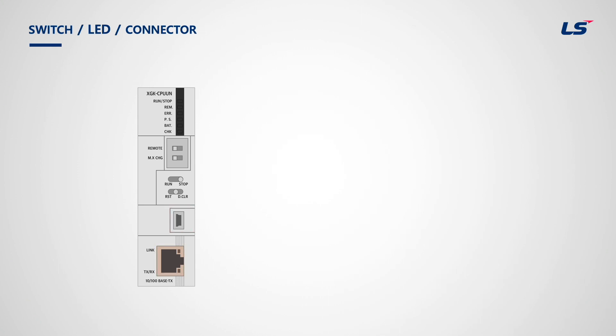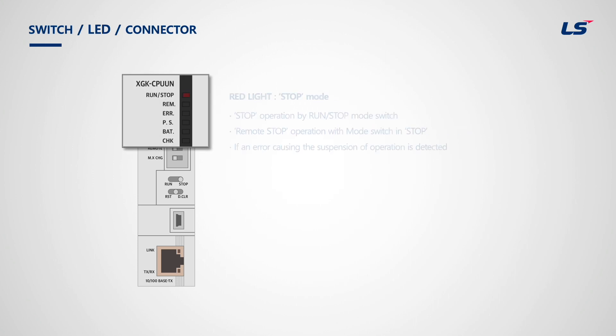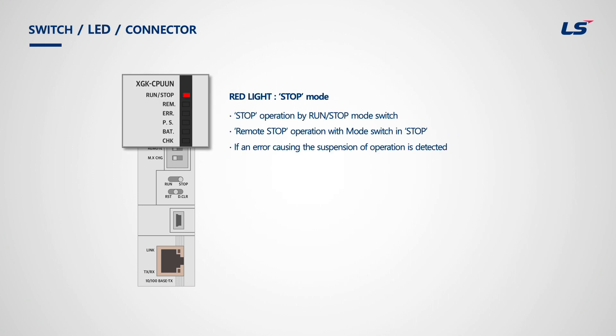The first LED on the top is the Run-Stop LED. When the PLC CPU starts to run, the green light is turned on. When the CPU stops, the LED turns red.